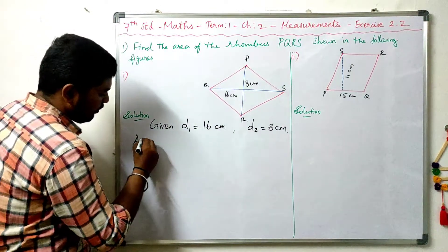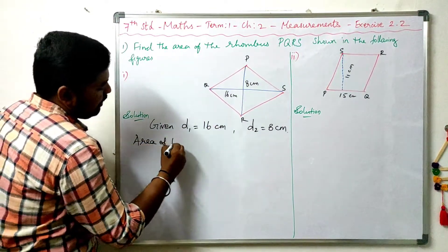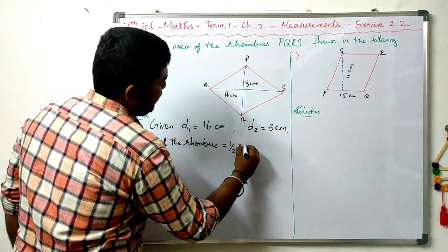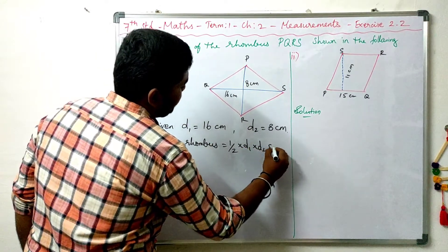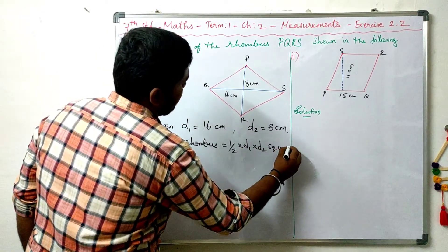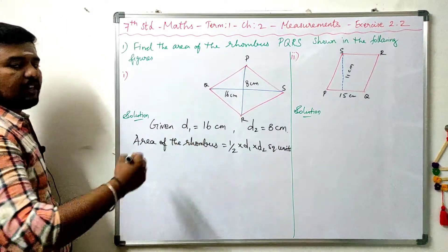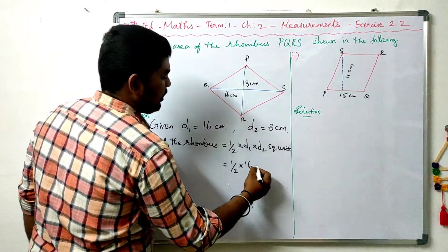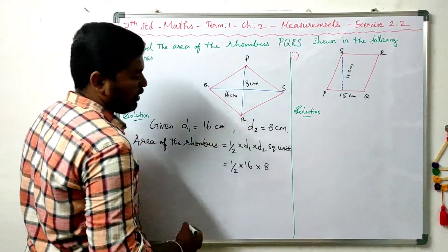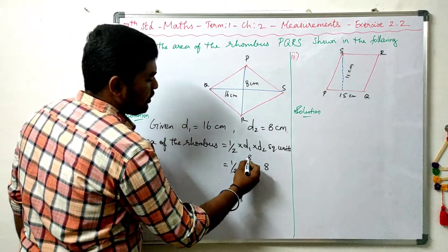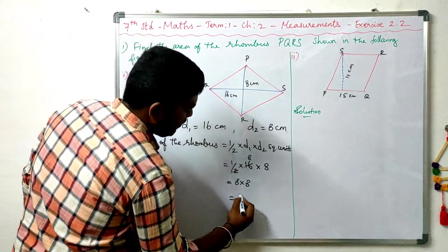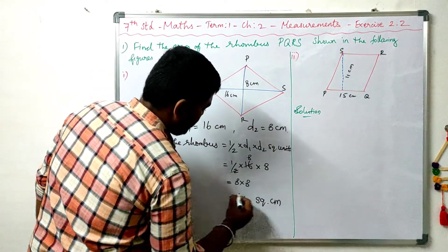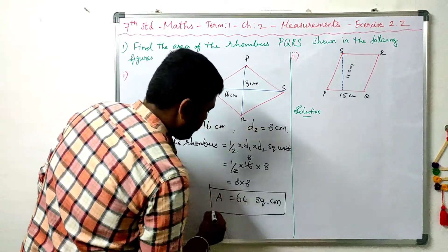What is the formula for the diagonal? Area of the rhombus is equal to half into D1 into D2 square units. This is the formula. Now we will substitute the given data: half into D1 = 16 cm, into D2 = 8 cm. Cancel: 2 into 8 = 16, so 8 into 8 = 64. The area is 64 square centimeters. This is the area of the rhombus PQRS.